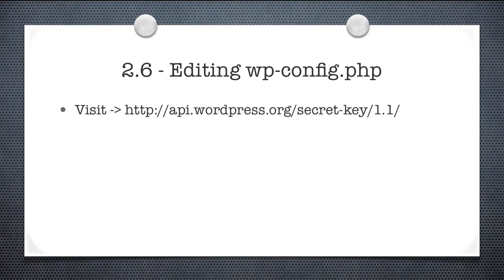Visit api.wordpress.org/secret-key/1.1. When you do this, you're going to be presented with a unique code. WordPress will automatically generate this and it really helps secure your site — it provides an extra layer of security. Failure to do so will make your site much more vulnerable to attack. This process takes less than 10 seconds to implement and the payoff is huge.